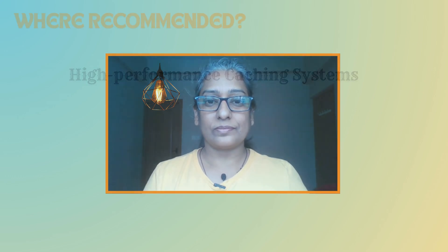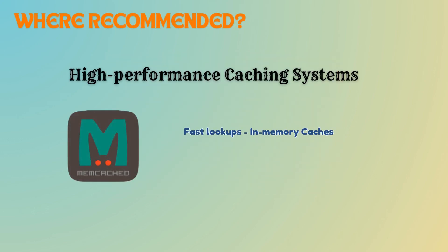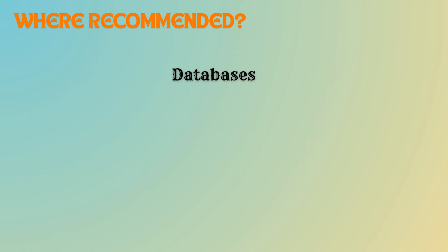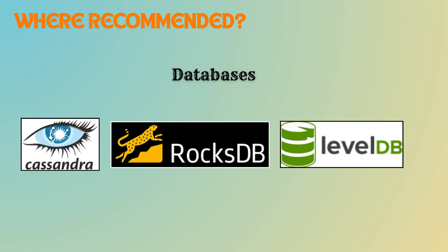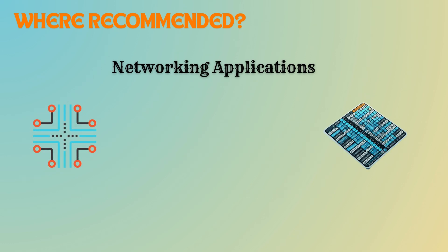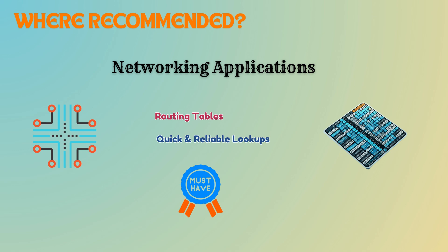Cuckoo hashing is highly efficient and used in various systems where high-performance lookups are essential. Systems requiring fast lookups, like in-memory caches, benefit from cuckoo hashing's O(1) lookup time. Certain databases like Cassandra, RocksDB, and LevelDB use cuckoo hashing to minimize rehashing operations and ensure efficient data retrieval. It is also useful in environments like routing tables where quick and reliable lookups are necessary.